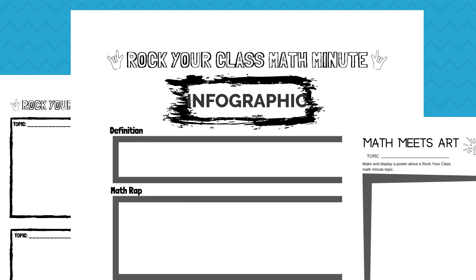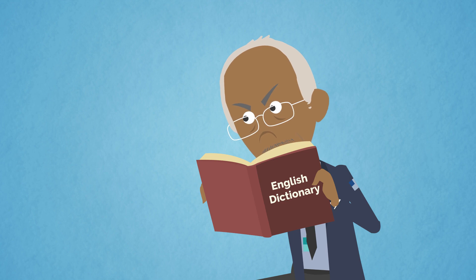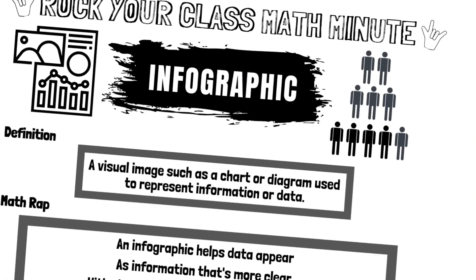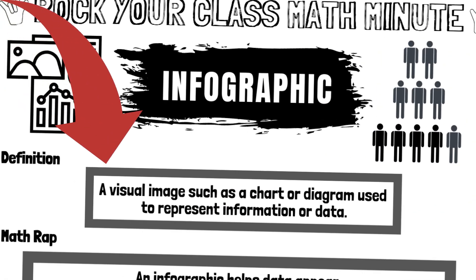Infographic. What does the dictionary say? A visual image, such as a chart or diagram, used to represent information or data.